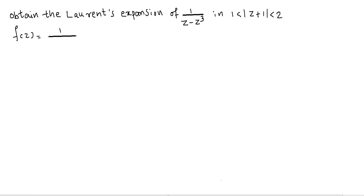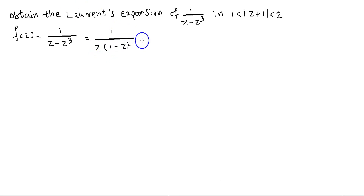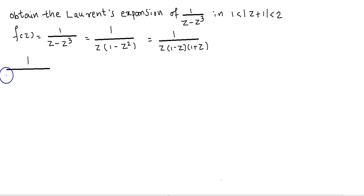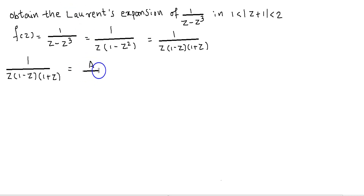We have F(z) equal to 1/(z minus z cubed). Upon factorizing the denominator, we can write 1/(z minus z cubed) in the form of 1 divided by z into (1 minus z) into (1 plus z). Let us apply partial fractions on this expression.